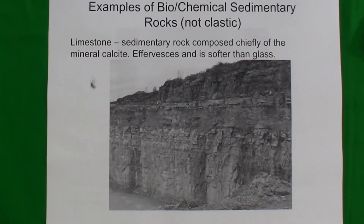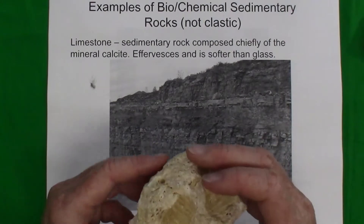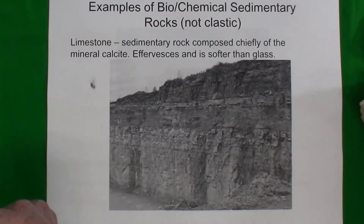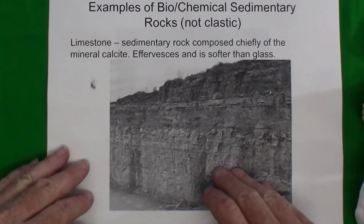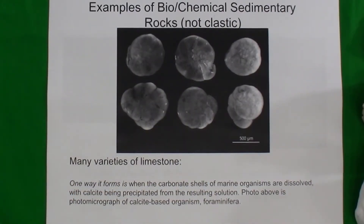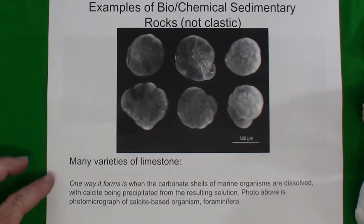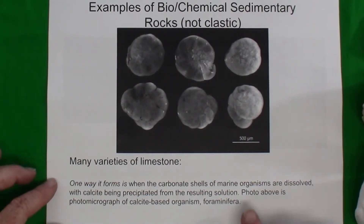Another very common chemical sedimentary rock is limestone. There are many different types, but in general limestone forms in an environment where calcium and bicarbonate are present in the water and organisms create their shells from these ions. One way limestone forms is when the carbonate shells of marine organisms are dissolved and calcite is precipitated from the resulting solution.